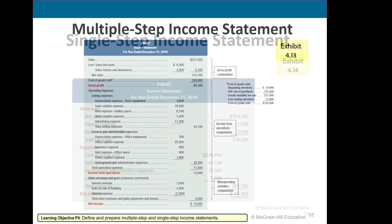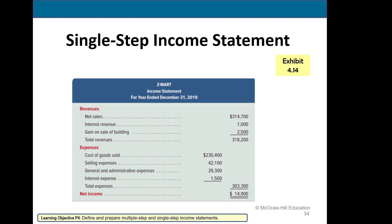As opposed to the single-step income statement, which has the same net income but without the detailed subtotals. We have net sales — not broken into gross sales and discounts. Other revenue like interest revenue and gains are included together. Expenses include cost of goods sold, selling, general and administrative, and interest expense, but there's no gross profit subtotal or the other intermediate subtotals you see in the multi-step format.